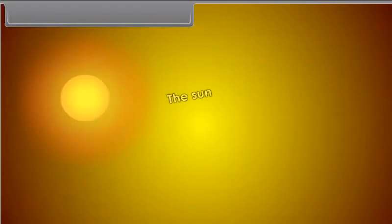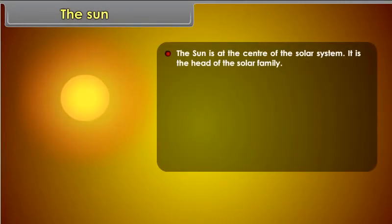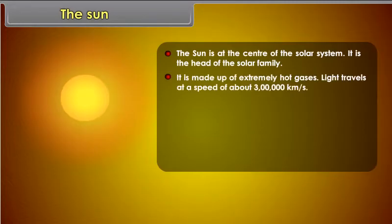The Sun. The Sun is at the center of the solar system. It is the head of the solar family. It is made up of extremely hot gases. Light travels at a speed of about 3 lakh kilometers per second.